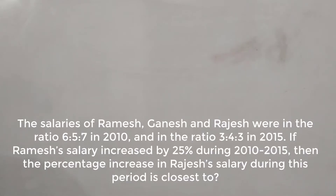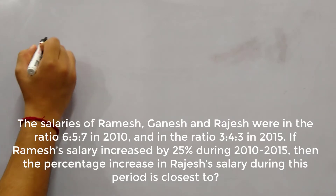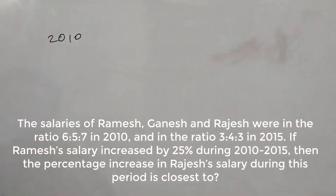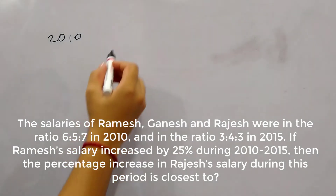The salaries of Ramesh, Ganesh and Rajesh were in the ratio 6:5:7 in 2010, and in the ratio 3:4:3 in 2015. So the ratio of salaries of these three are given for two years. Let's say in 2010 their salaries were in ratio 6:5:7.